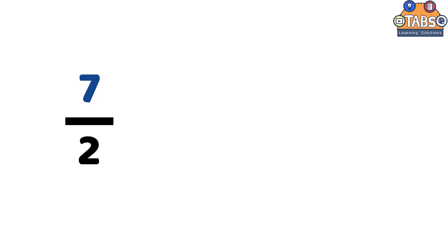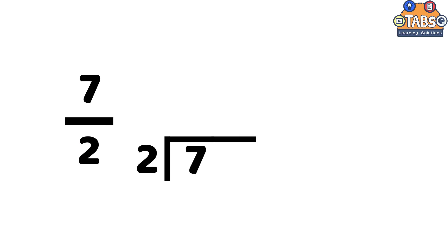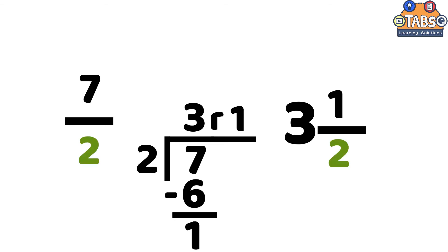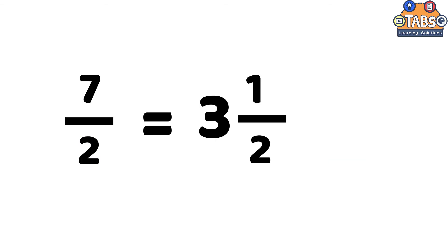We will divide the numerator by the denominator, so the equation will be seven divided by two. Seven divided by two is equal to three remainder one. So the quotient will be the whole number, and the remainder is the numerator. After that, just copy the denominator. So the answer is three and one-half.